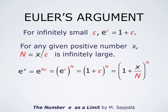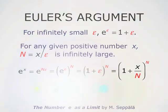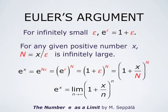n is not an ordinary number — n is a quantity which is infinitely large. So what Euler really means in his argument is that e to the x is the limit as n approaches infinity of the quantity 1 plus x over n, raised to the power n.